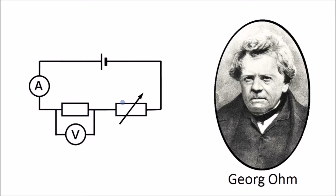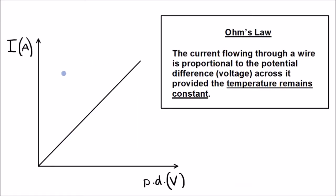By changing the current, for each value of current you can find the potential difference. If you plotted potential difference on the x-axis and current in amps on the y-axis, you'd get a straight line. If you double the potential difference, the current also doubles. This shows that potential difference and current are proportional.